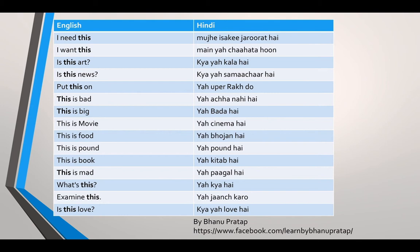This is big — Yeh bada hai. The Hindi of 'big' is bada. This is movie — Yeh cinema hai. The Hindi of 'movie' is cinema. Yeh cinema hai. This is food — Yeh bhojan hai. The Hindi of 'food' is bhojan. Yeh bhojan hai.